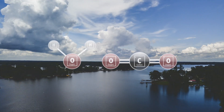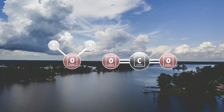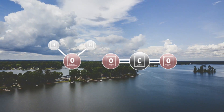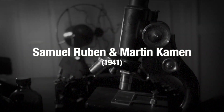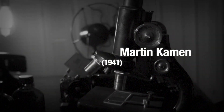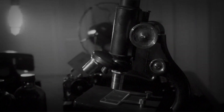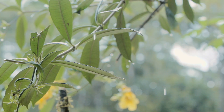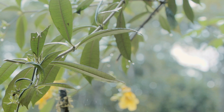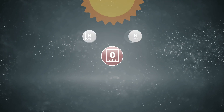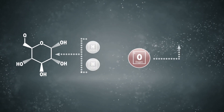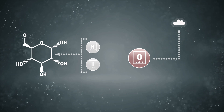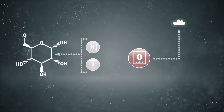For a long time it was believed that the oxygen came from the carbon dioxide molecule. But in the 1940s, two scientists called Samuel Rubin and Martin Kamen showed that it was in fact the oxygen from the water — and not the carbon dioxide — that was released into the atmosphere. When sunlight splits up the water molecules, the hydrogen eventually becomes part of the glucose molecule and the oxygen is released.